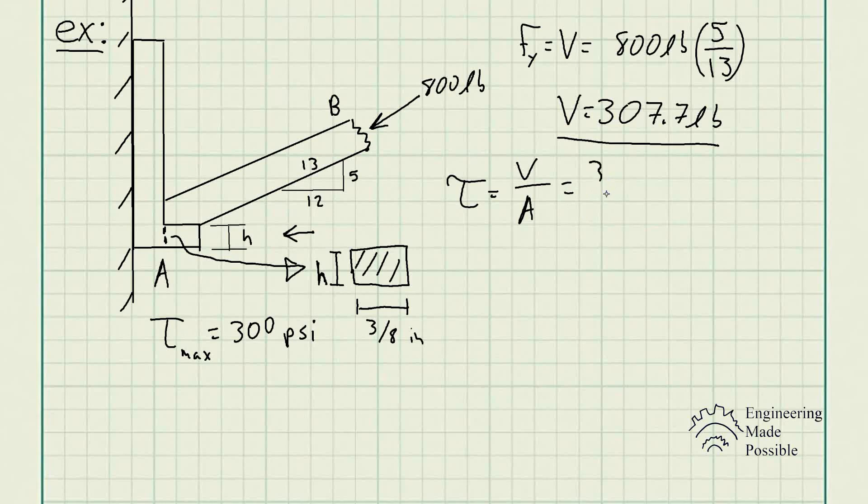We already know the shear force is 307.7 pounds divided by height times 3/8 inch. We know the maximum allowable in this case is 300 pounds per square inch. So this is what we already have for this shear stress, the allowable.